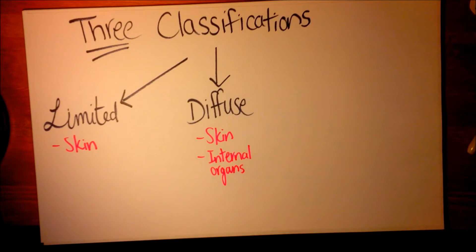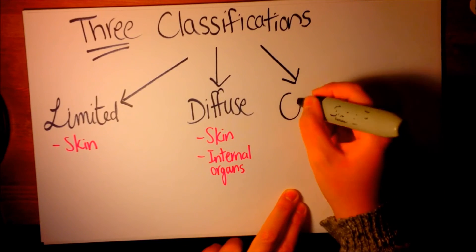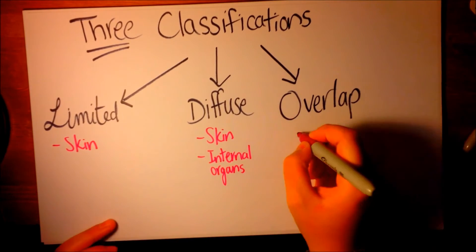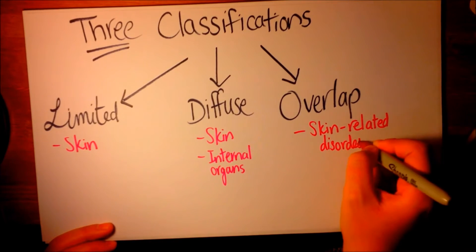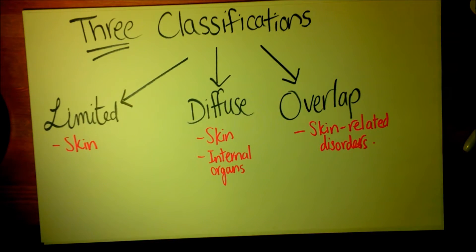There is a higher chance in these patients of developing widespread fibrosis of the internal organs. Overlap syndrome is seen in patients presenting with features from multiple skin-related diseases such as scleroderma, lupus, or inflammatory arthritis.